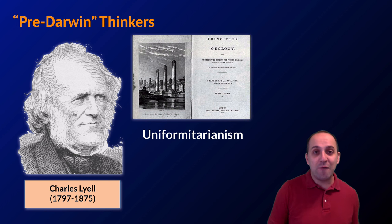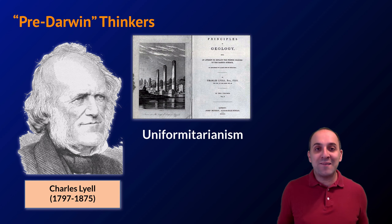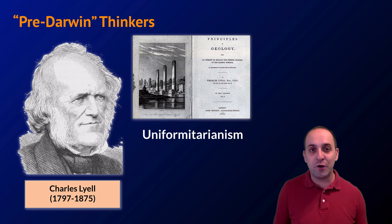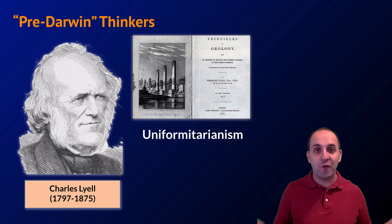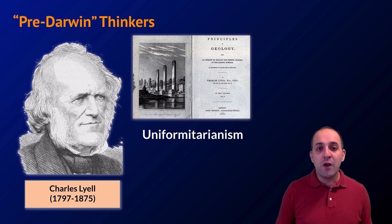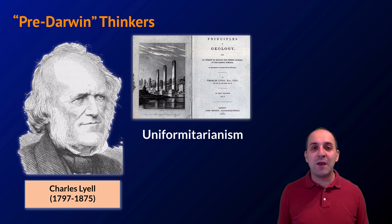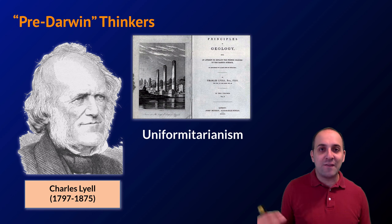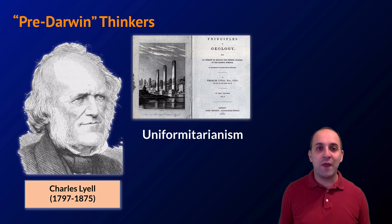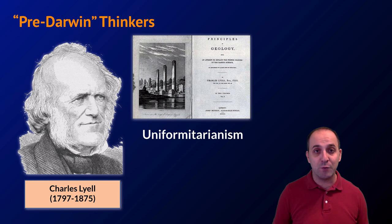This was very different from the major thinking of the time, which basically took the Bible and backdated it to Genesis to determine how long the earth had been around — somewhere around 10,000 years. Uniformitarianism and other ideas like it really challenged that notion and suggested that the earth was in fact much, much older than a literal biblical interpretation would lead people to believe.